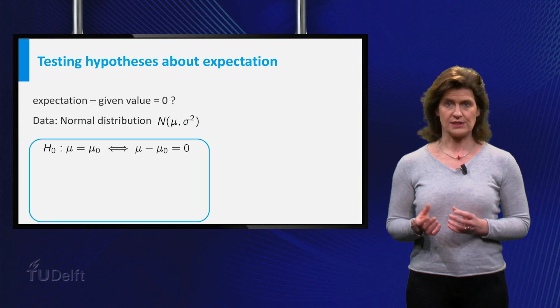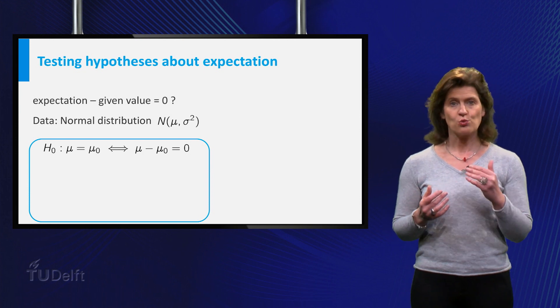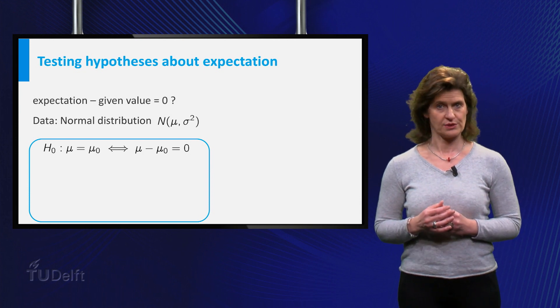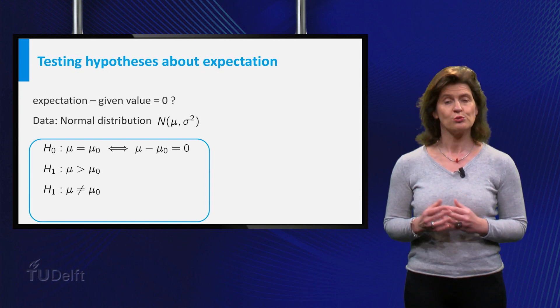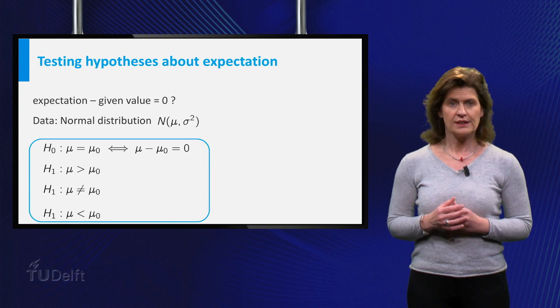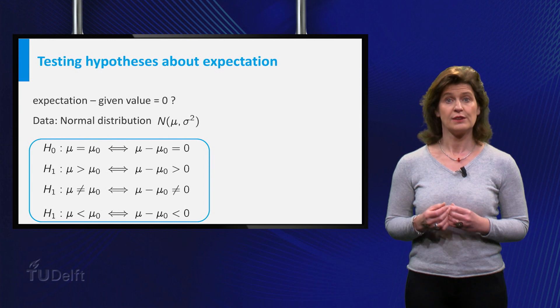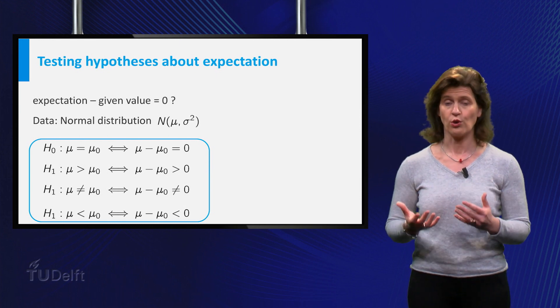You test the null hypothesis that mu is equal to some given mu0 against one of the following alternative hypotheses: mu is greater than mu0, mu is not equal to mu0, or mu is smaller than mu0. This is equivalent to testing if the differences are greater than, not equal to, or smaller than 0.